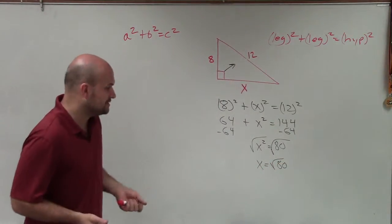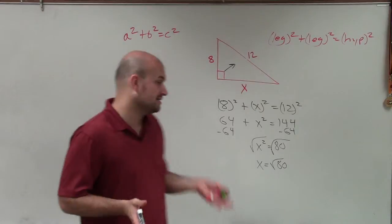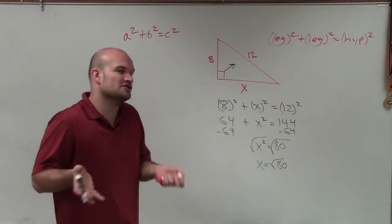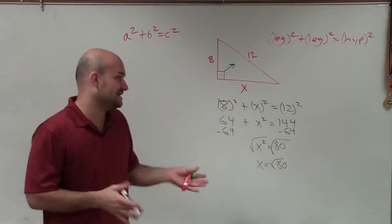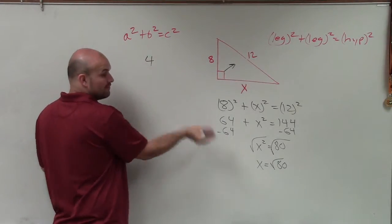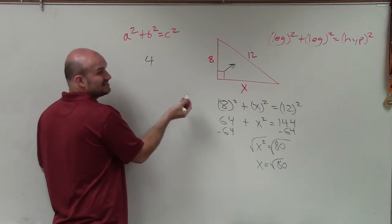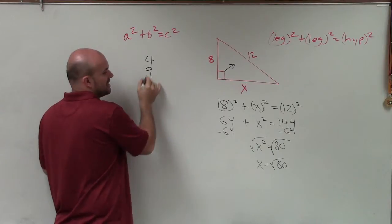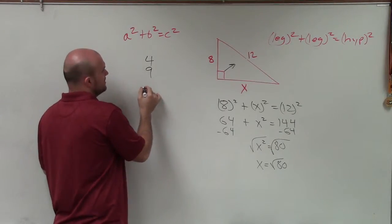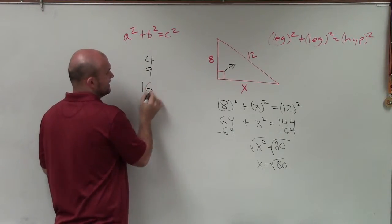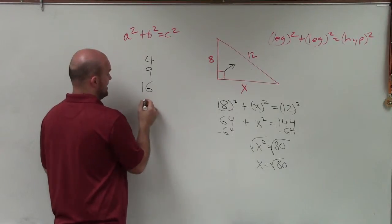And now what I need to do is I want to make sure I can always simplify the square root of 80. So I want to look at what is the largest square number that evenly divides into 80. So square numbers start at 4. Now, 4 does divide into 80, but I want to see, is there another square number that's larger? 9. 9 does not divide into 80. So then I go to 16. And 16 does divide into 80.